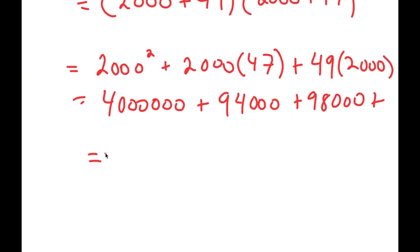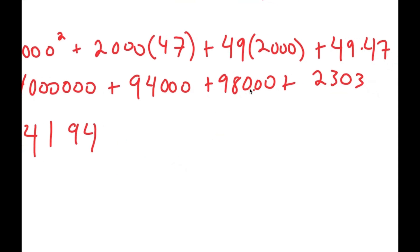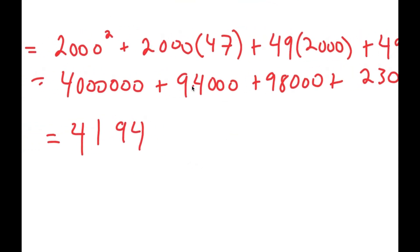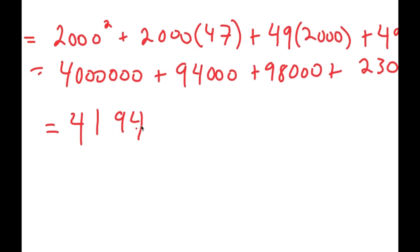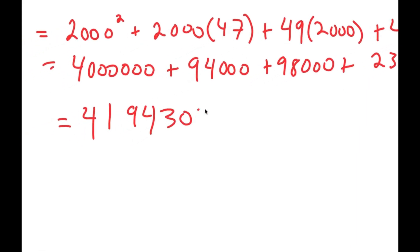2000 squared is 4 million, plus 47 times 2000 is 94,000, plus 49 times 2000 is 98,000, and finally 49 times 47 is 2303. By adding all these up, I get 4,000,000 plus 194,000 — because 94,000 plus 98,000 is 194,000 — and then I add 2,303, giving me 303 at the end.